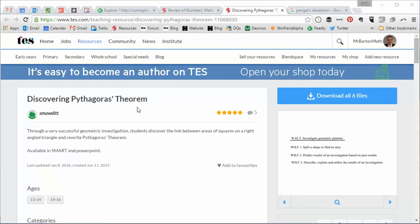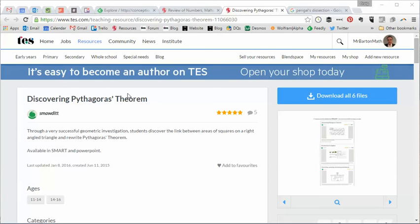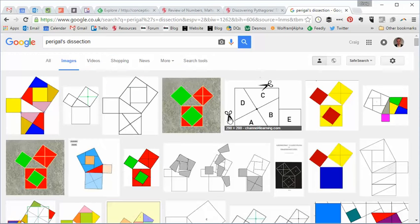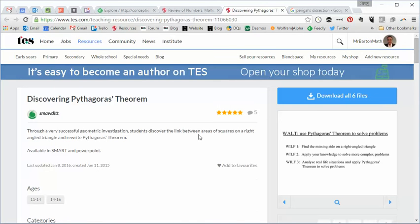So over the years I've dabbled with a few different ways of introducing Pythagoras. With some classes we've done it as a number-based investigation where I've shown them areas and they've got to link together the numbers. With other classes I've done the classic Perigal's dissection, getting the scissors out and matching it up. But this is a way I haven't tried before, but this is certainly a way I will be using.